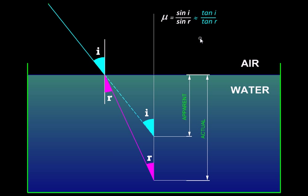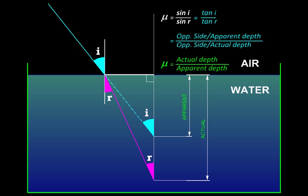We can do that when the angles are small. So let us mark this length here. Since tangent function is opposite side upon adjacent side, the opposite side to i is this, adjacent side is the apparent length, while for r the opposite side is the same and the adjacent side is the actual depth. Now, these opposite sides being the same, they will cancel out, and therefore our formula will reduce to μ equals the ratio of actual depth to apparent depth.